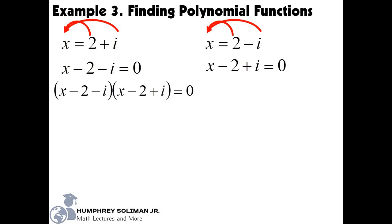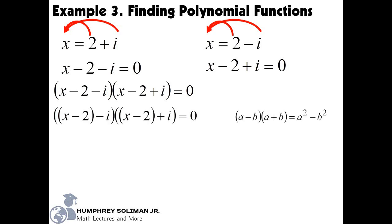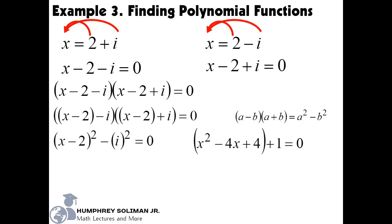Also, notice again that we can write each quantity as binomials. And what we have now is a special product, the sum and difference of binomials. This will give us again the difference of two squares — the square of the first term minus the square of the second term. We can expand the square of the first term into x squared minus 4x plus 4, and we can also simplify the square of the second term as plus 1. Simplifying further, we can get x squared minus 4x plus 5.